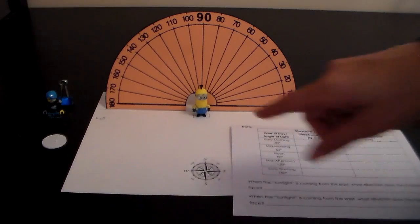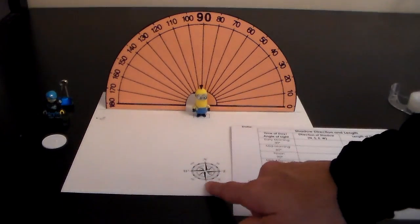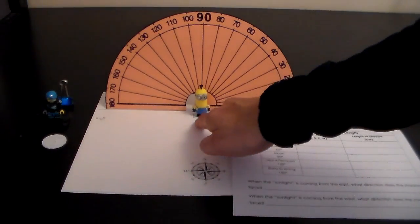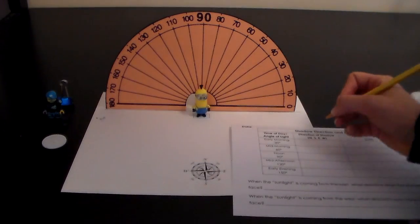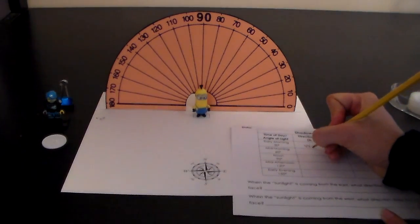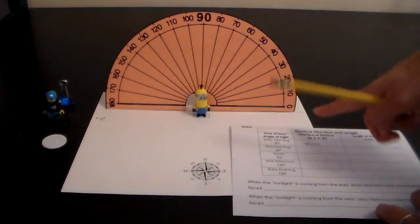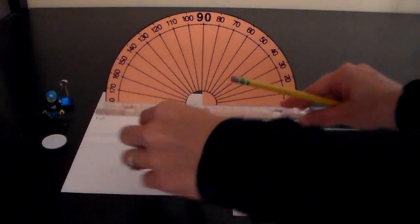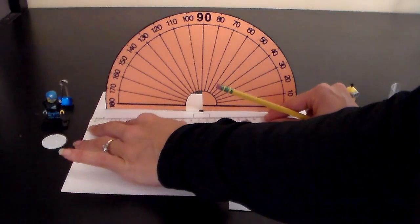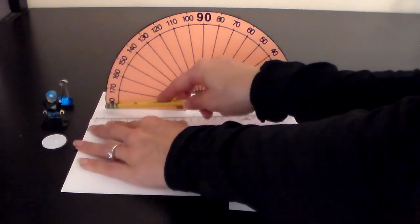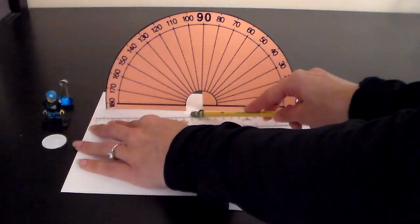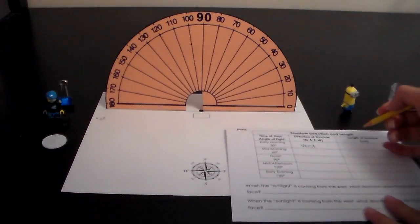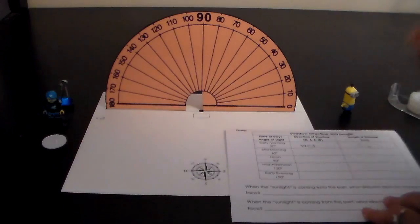Students should then record the direction of the shadow from the minion using the compass that's printed on the front of the shadow tracker. So from the minion it's directly to the west so I will write west into the data table. Next the student should move the minion and measure from the shadow mark to the edge of the box and I have 12.2 centimeters so I'll write that under the length of the shadow.